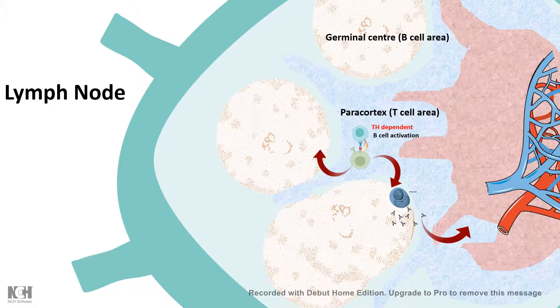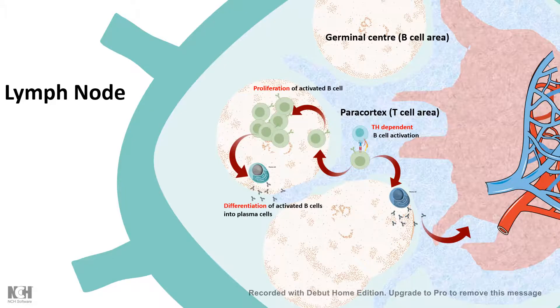Otherwise, the B cells migrate to the germinal center, migrate to the B cell follicular zone, and in there they amplify and proliferate to form the germinal center. Eventually they can be differentiated into the plasma cells.